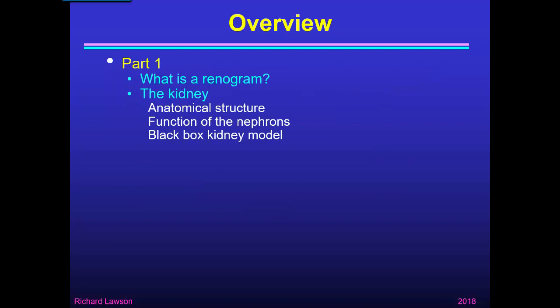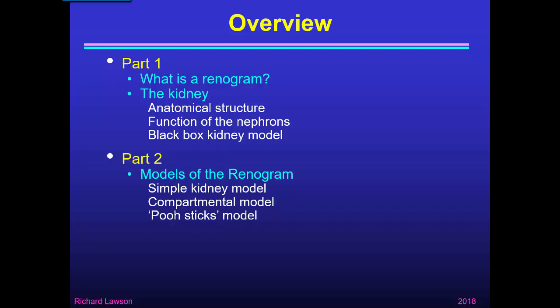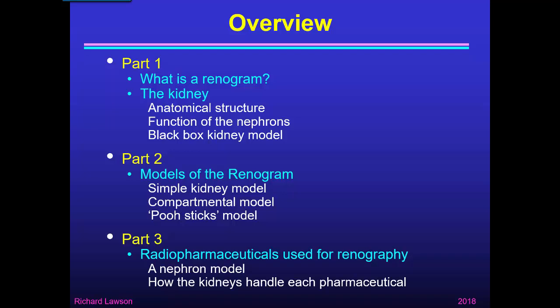In the first part of this talk I'm going to explain what the renogram is, talk about the kidney, its anatomical structure, the functions of the nephrons from which it's made, and show my black box kidney model. In the second part I'll describe some models of the renogram — a simple kidney model, a compartmental model, and my poo-sticks model. In the third part I'll talk about the radiopharmaceuticals used for renography, and explain how a nephron model can explain how the kidneys handle each radiopharmaceutical.